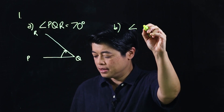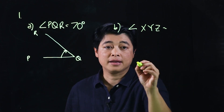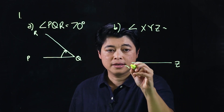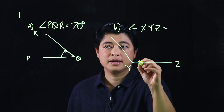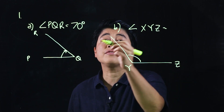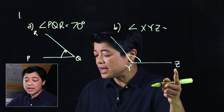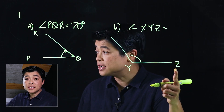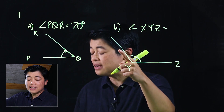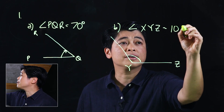In letter B, which is angle XYZ, we're reading from the right. Since we're reading from the right and the zero is on the bottom, we read the bottom numbers. Going through the bottom numbers, it's in between 100 and 110, so this must be 105 degrees.